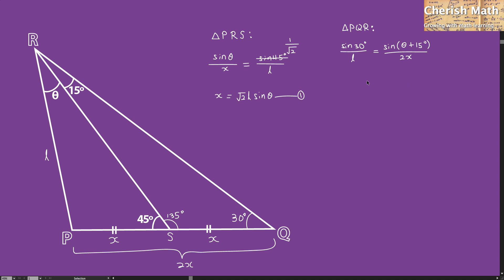I know that sine 30 degrees equals 1 half. Since 2 and the 2 here cancel, I'm going to simplify it. For the part on sine theta plus 15 degrees, I'm going to expand this using the addition formula.